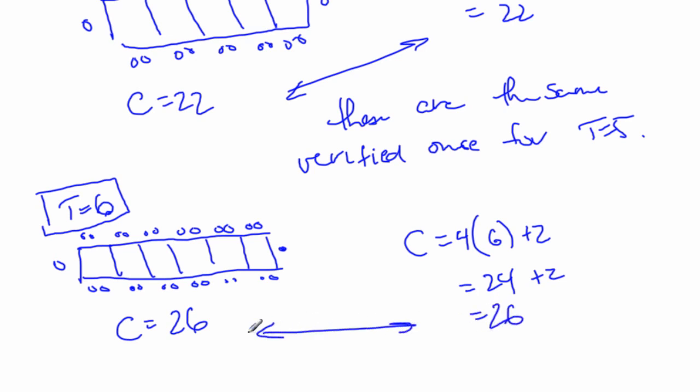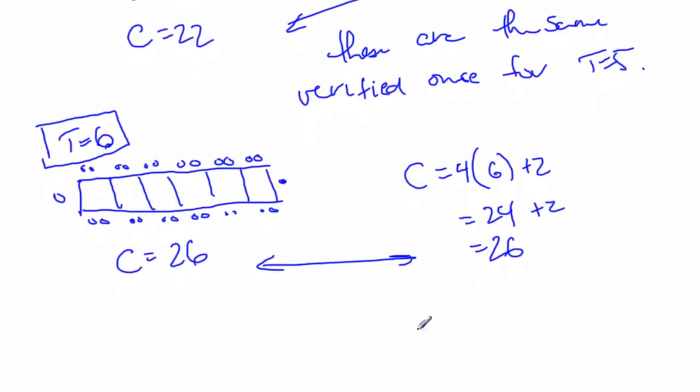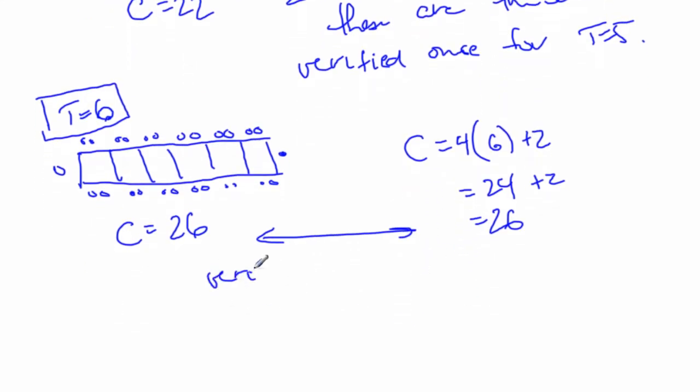And so now, again, I've checked it by diagram, I've checked it by formula, it is verified. And really make sure that they are the same. So if you've counted it, and you don't get the same number, go and count them again. If they're not the same, then either your formula's wrong, or you've counted them incorrectly.